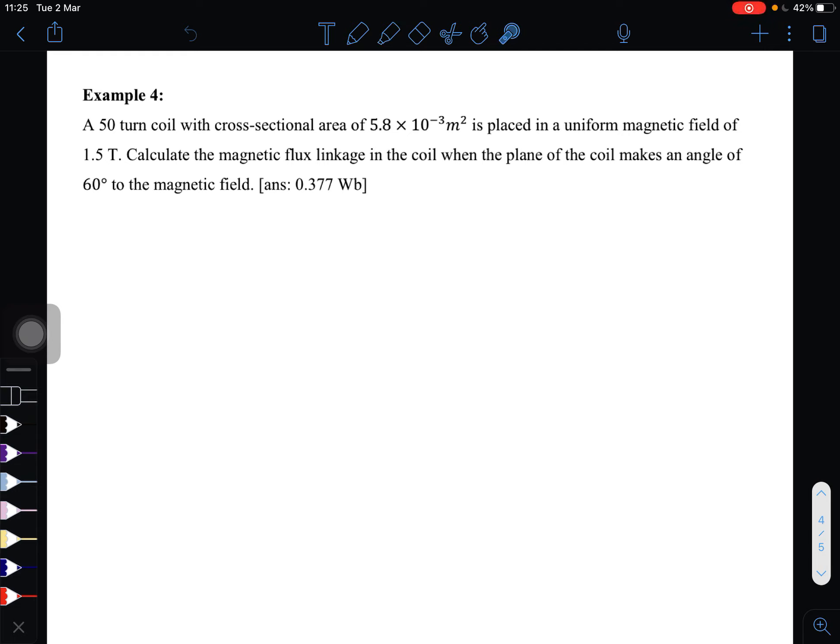Okay, next one, Example 4. A 50-turn coil with cross-sectional area of 5.8 × 10⁻³ m² is placed in a uniform magnetic field of 1.5 T. Calculate the magnetic flux linkage in the coil when the plane of the coil makes an angle of 60° to the magnetic field.